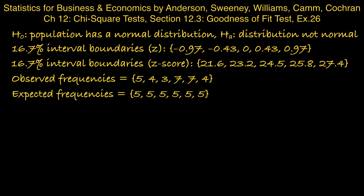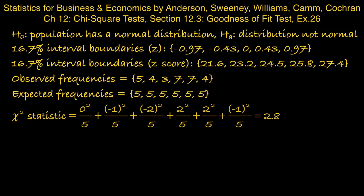Then our chi-squared statistic: take the difference between the observed and expected frequency, square it, divide by the expected frequency, and add up over the 6 entries. We obtain 2.8 for our chi-squared statistic.